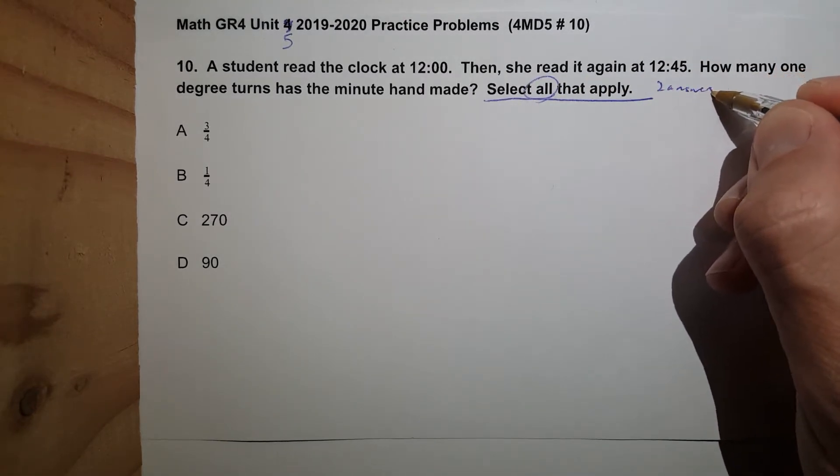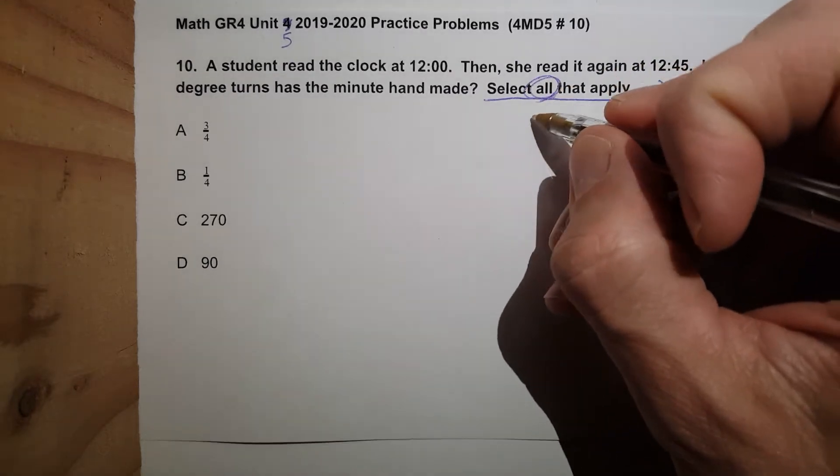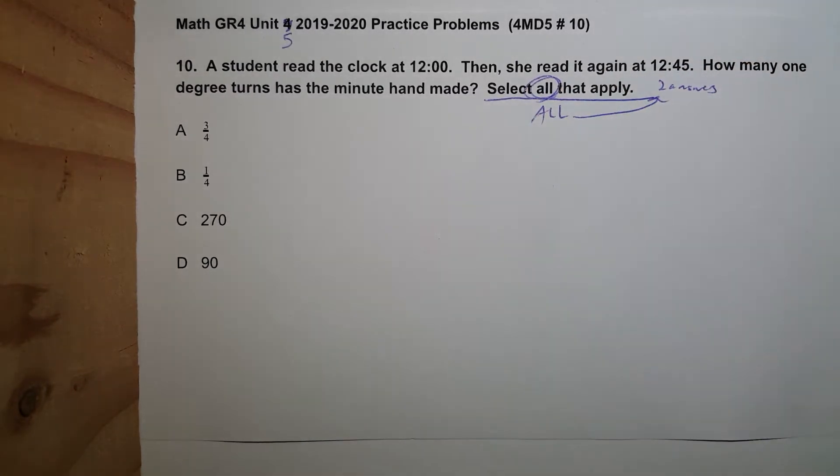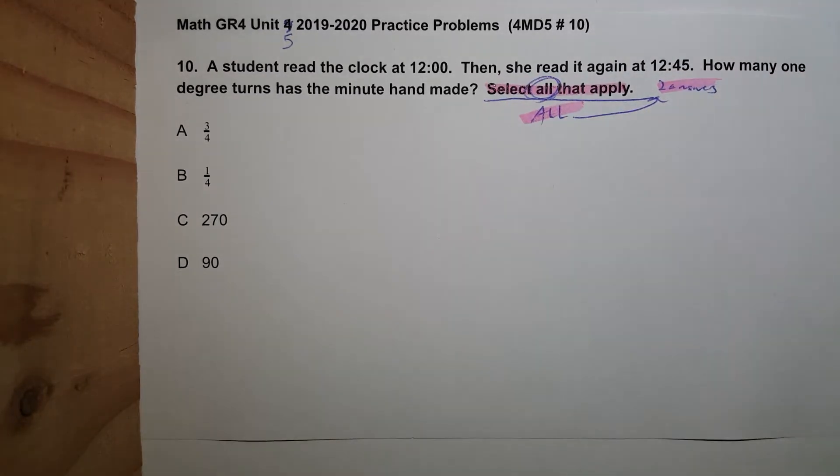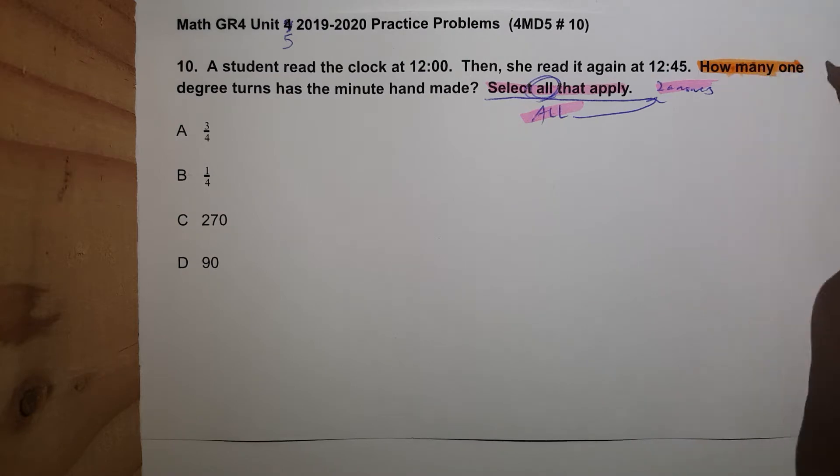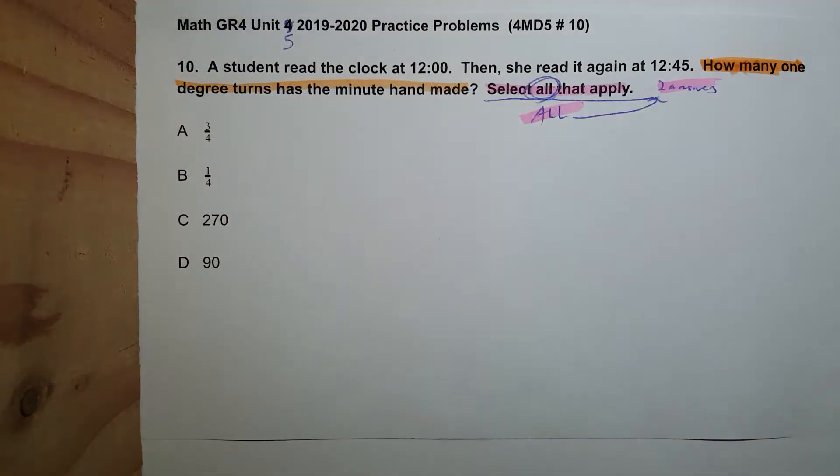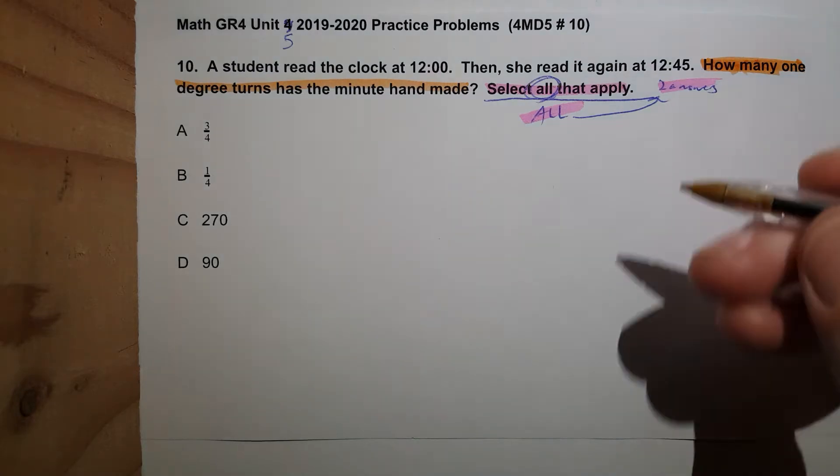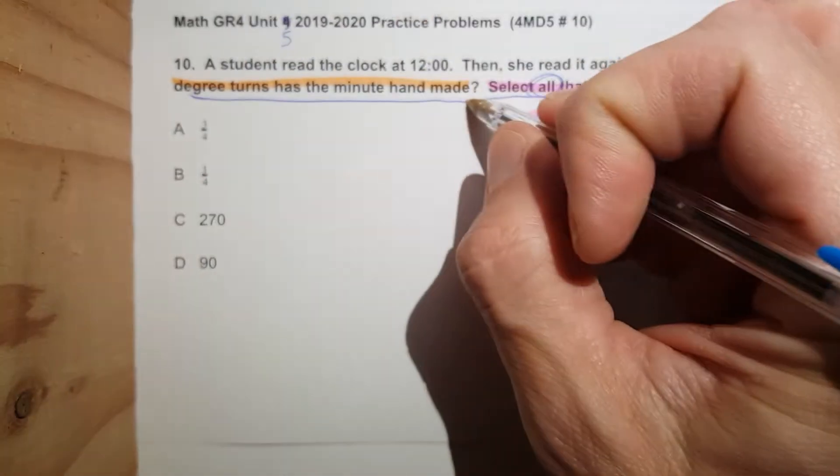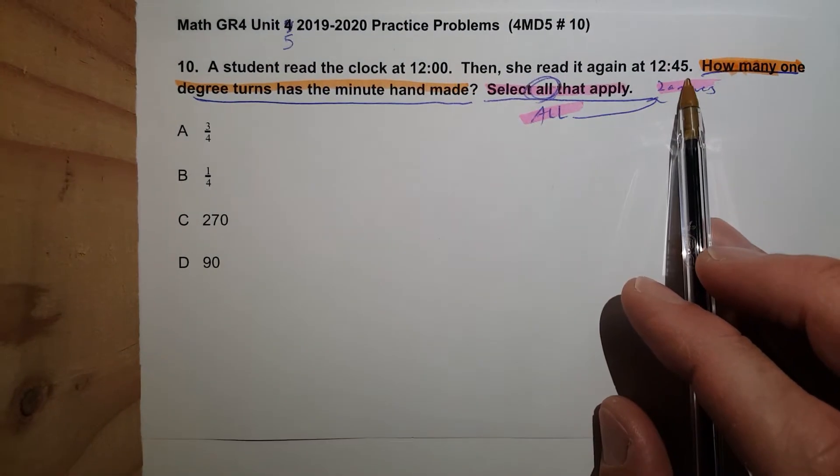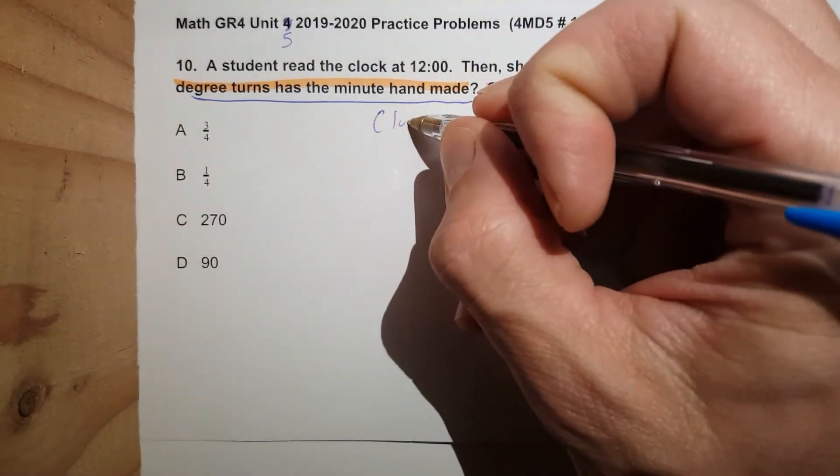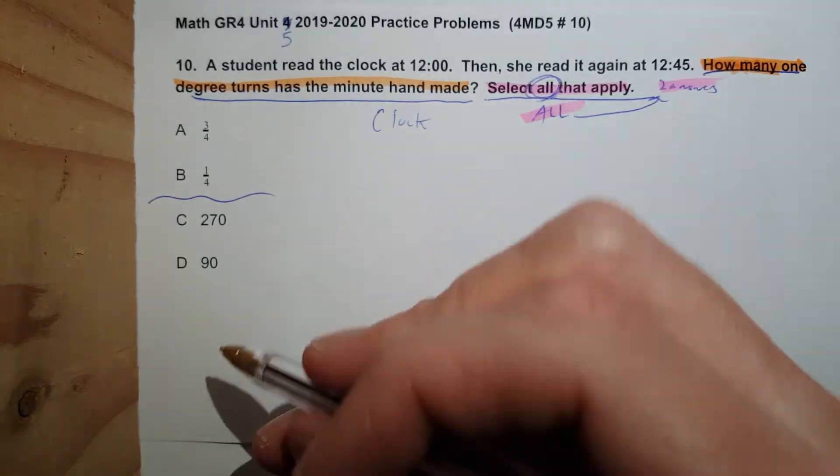Select all that apply right away. This almost always means two answers. The keyword 'all' is super important, so let's highlight it. Going backwards, how many one degree turns has the minute hand made? Let's underline the question: a student read the clock at 12 o'clock, then she read it again at 12:45. So let's do a clock and look, we have degrees and fractions.